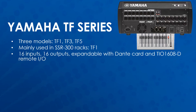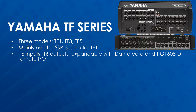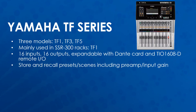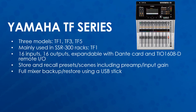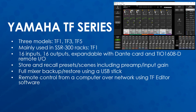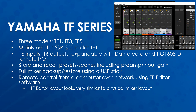The TF1 has 16 inputs and 16 outputs, and is expandable with a Dante card and TO1608D remote I/O boxes, which have 16 inputs and 8 outputs. The TF series can store and recall presets known as scenes that include the preamp gain setting. A full mixer backup and restore can be done using a USB stick, and remote control from a computer over networking is done using TF editor, where a backup and restore can also be performed. TF editor's layout looks very similar to the physical mixer layout, which can help with troubleshooting and walking a customer through steps, though not all settings show up in TF editor.